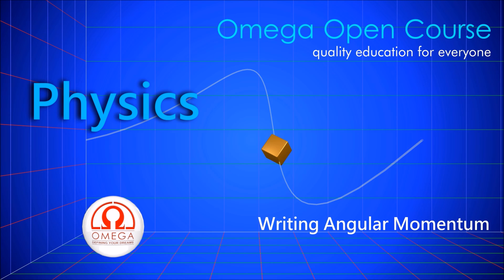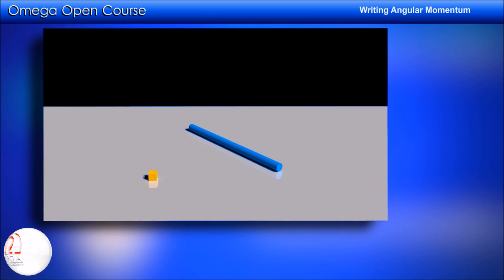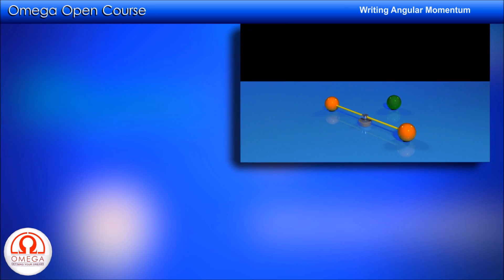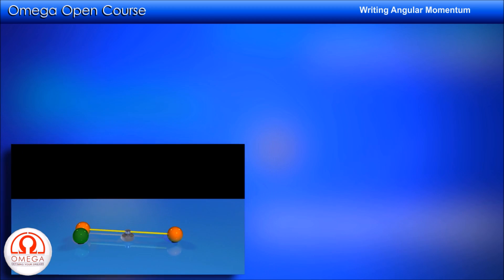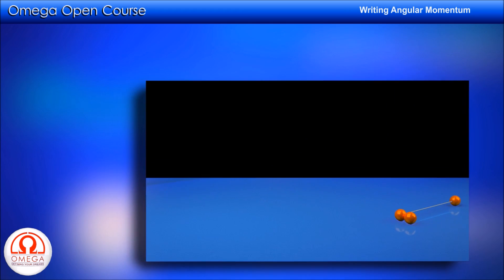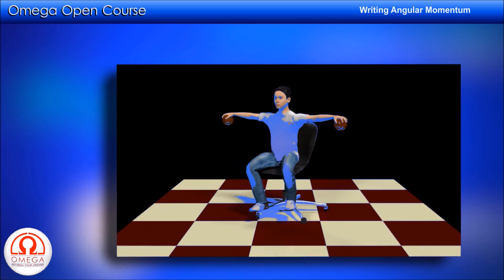Welcome to Omega Open Course. The conservation of angular momentum is one of the fundamental laws of physics, and many good problems of rotational dynamics require one to use conservation of angular momentum. But the majority of students struggle while writing angular momentum, and precisely because of that they find rotational dynamics the toughest topic in high school physics. In this video, we will discuss how to write angular momentum of any system about any given point at high school level. We will not be discussing what angular momentum is — that requires a separate video. Our focus is entirely on writing the angular momentum of a given system about any point.